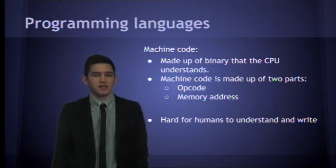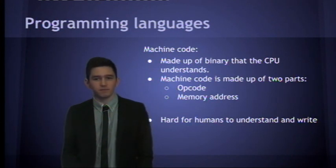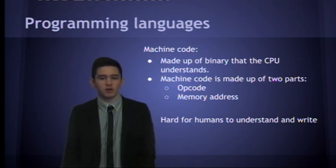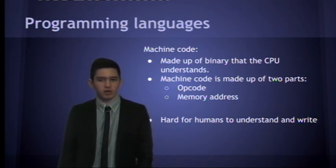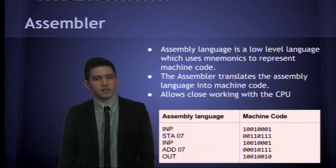Whereas, machine code is the code that goes through the CPU, so it's made of binary. Machine code is split up into two parts, the opcode and the memory address. It's hard for humans to understand because it's all binary. It's very difficult to understand.